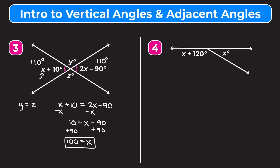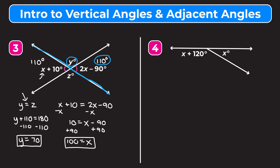Now we use that to find y and z. The angle measuring 110 degrees and the angle measuring y degrees form a straight line, so they add up to 180 degrees. Setting up the equation: y plus 110 equals 180. Subtracting 110 from both sides gives y equals 70 degrees. Since y and z are vertical angles, z is also equal to 70 degrees.